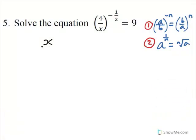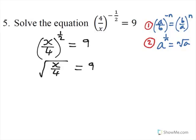We'll get x over 4 to the power of 1 half equals 9. Based on rule 2, that power of 1 half means the square root of x over 4, equals to 9.